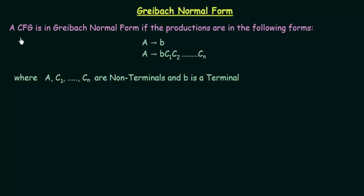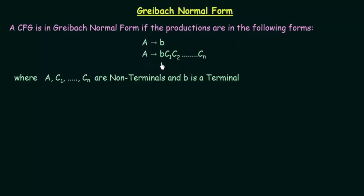A context-free grammar is in Greibach Normal Form if the productions are in the following forms: A gives b, or A gives b C1 C2 up to Cn, where A and C1 through Cn are non-terminals and b is a terminal symbol. If productions have either of these two forms, they are said to be in Greibach Normal Form; otherwise they are not.